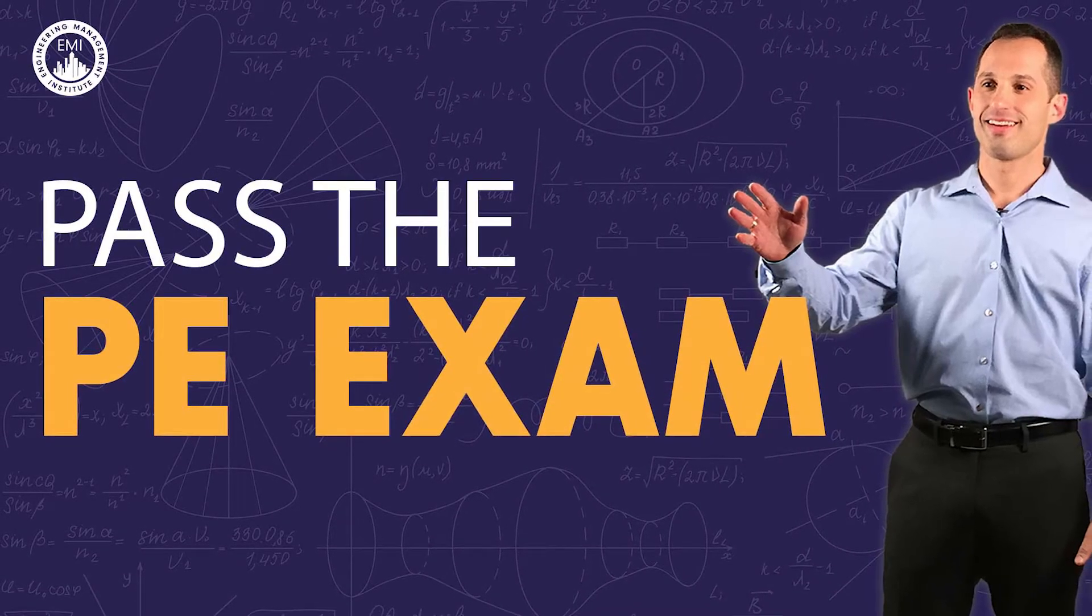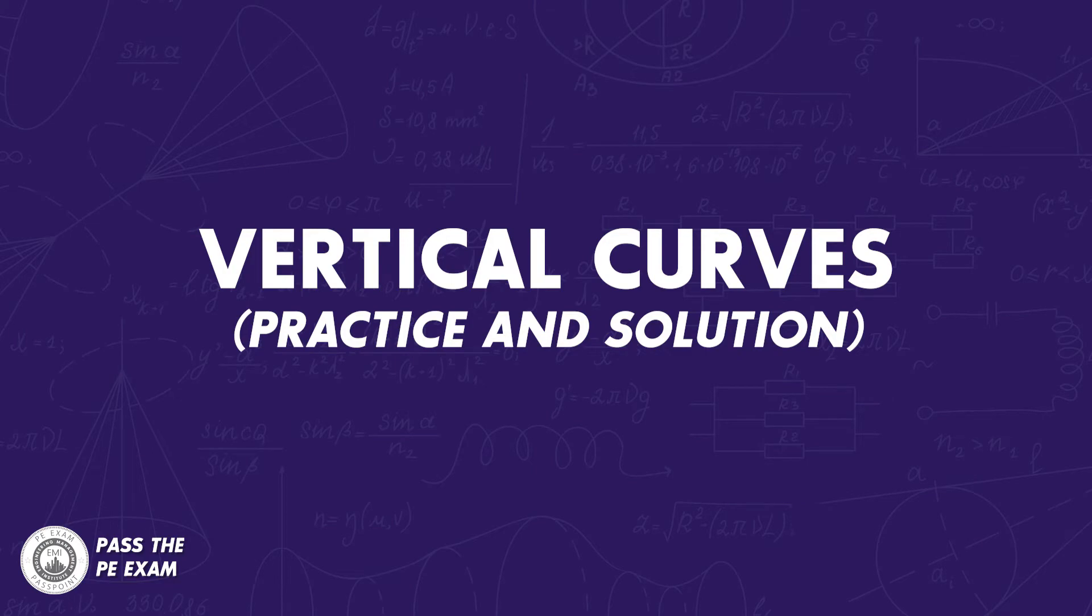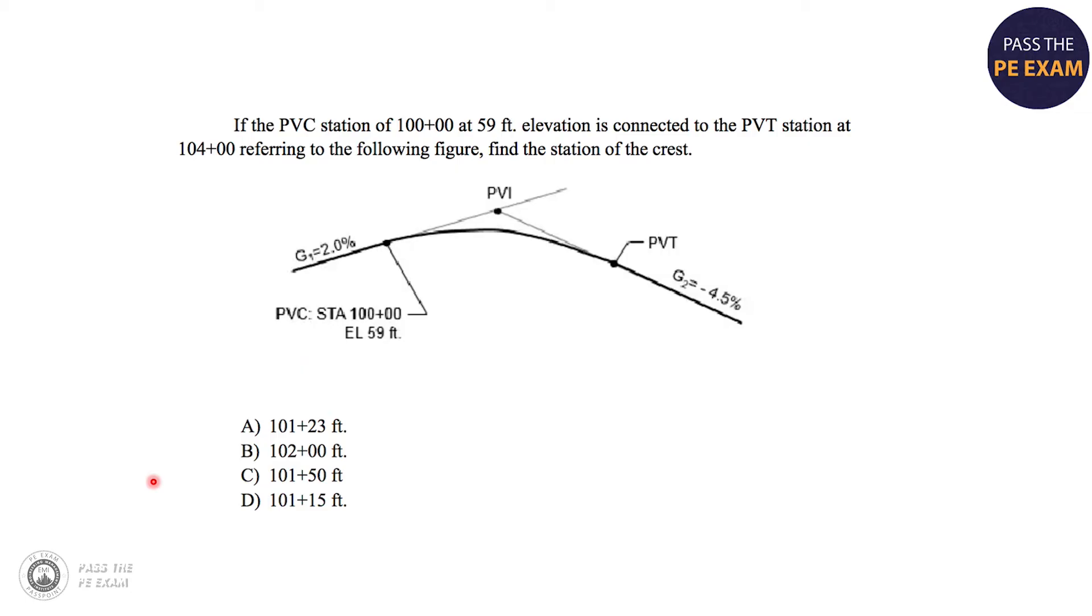Let's jump into the problem. If the PVC station of 100 plus 00 at 59 foot elevation is connected to the PVT station at 104 plus 00, referring to the following figure, find the station of the crest.